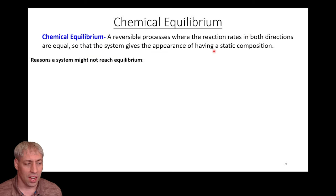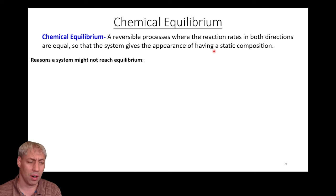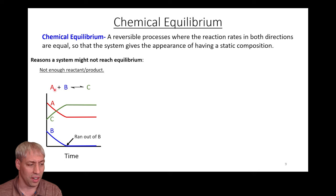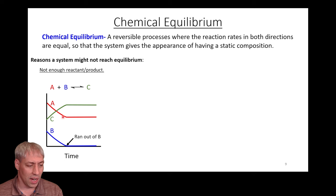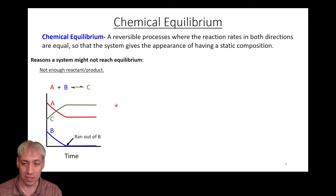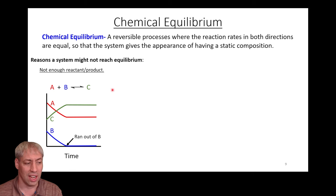If you give a system enough time, it will reach equilibrium eventually, but there are some exceptions. One is if you don't have enough of a certain reactant or product. You can see a graph where you're starting with a lot of A, a little bit of B and a little bit of C — if A reacts and B runs out completely, there's going to be a plateau, but it's artificial; it hasn't reached true equilibrium. A can't turn into C because there's not enough B to react with, so if there's zero B, this reaction simply can't happen.